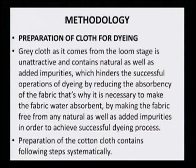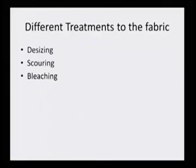Preparation of cotton cloth contains the following steps systematically. Cotton is the toughest to dye, so we have to take a lot of precautions. Unless cotton is washed properly, it will not have good absorbency, and because of the waxes and oils on the cotton surface, it will be even tougher to dye. There are three main steps: desizing, scouring, and bleaching.